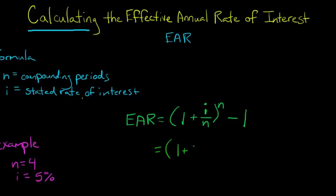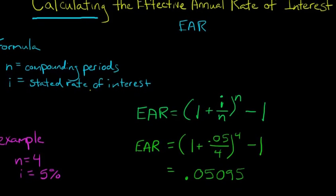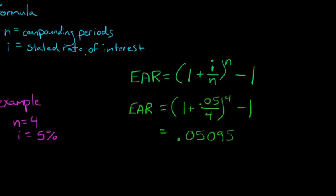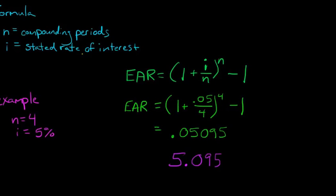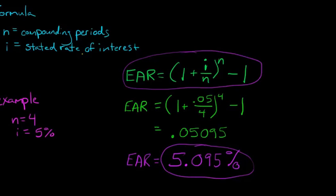We've got 1 plus 0.05 over 4 to the 4th power minus 1. That's going to yield our EAR. Rounded, it comes out to 0.05095, which is the same as saying 5.095% EAR. That's our effective annual interest rate. We just needed to know N and I, the number of compounding periods and the stated rate of interest. We plug it into this formula, and that gives us our effective annual rate of interest.